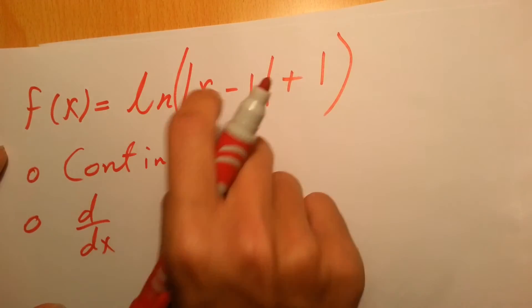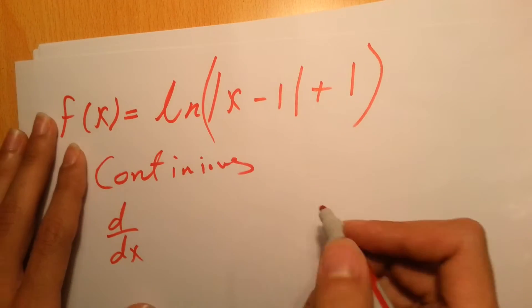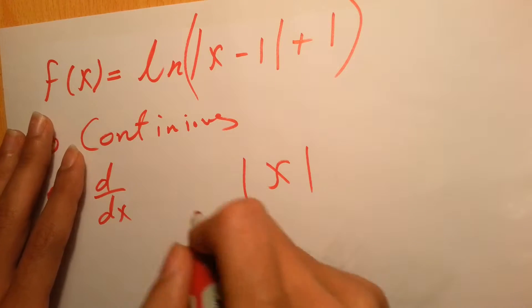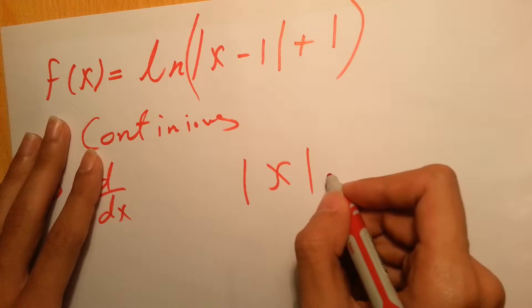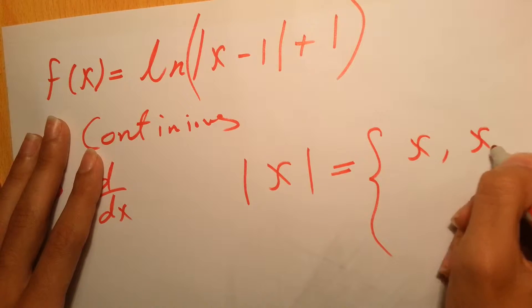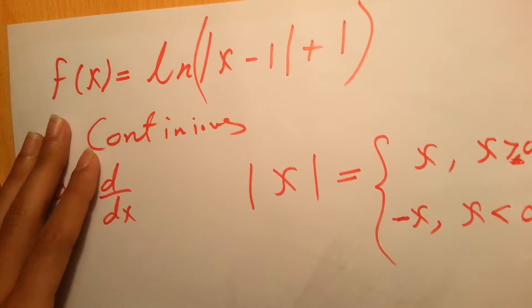First of all, since we have absolute value in our function, this function can be divided into two parts. For example, if we had the function absolute value of x, we can write it as x for x greater than 0, and minus x for x less than 0.